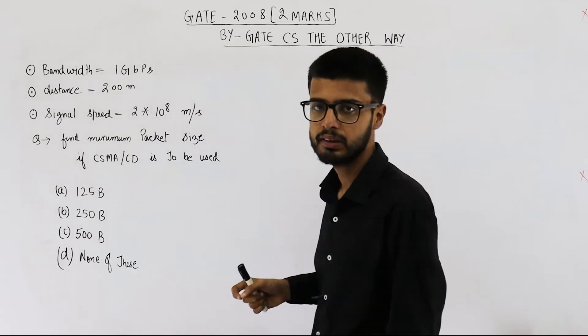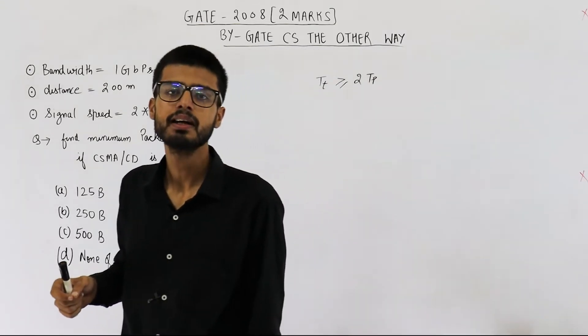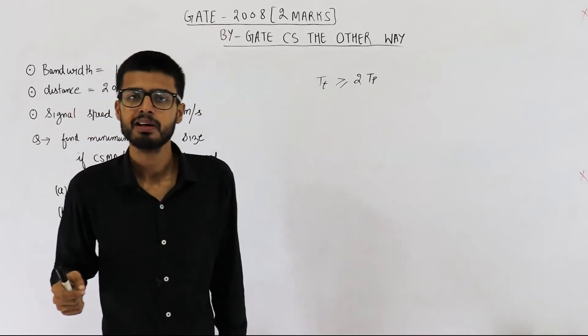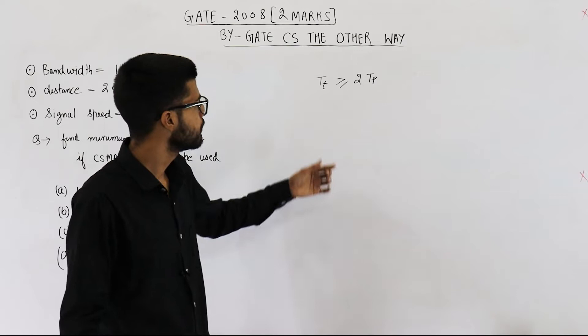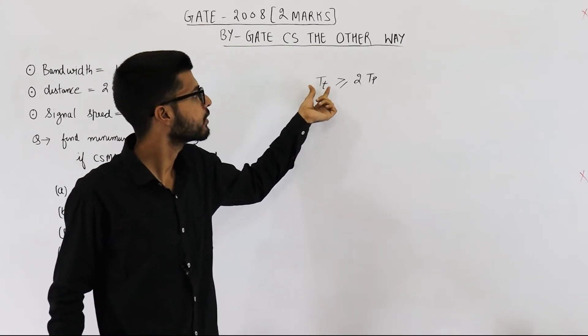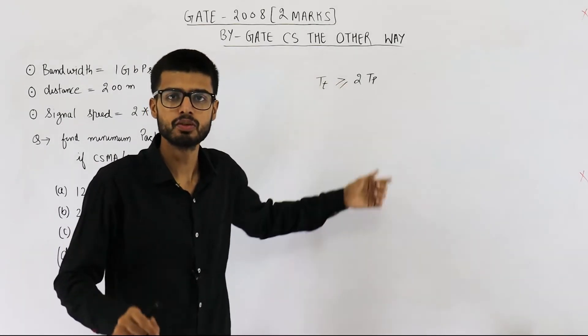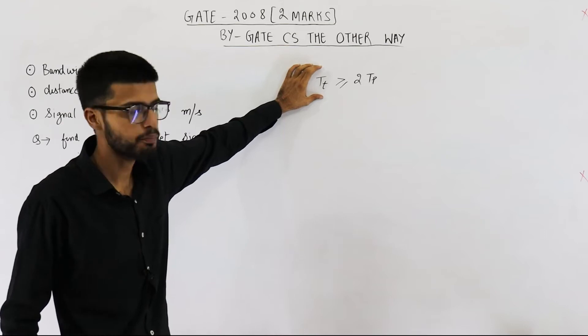Now you very well know that in a CSMA CD network, we want that the transmission time must be greater than or equal to twice of propagation delay. That means a packet must be long enough that we keep on transmitting it for more than twice of propagation delay. Tt is dependent on length of packet.